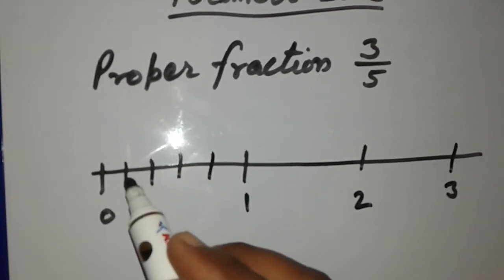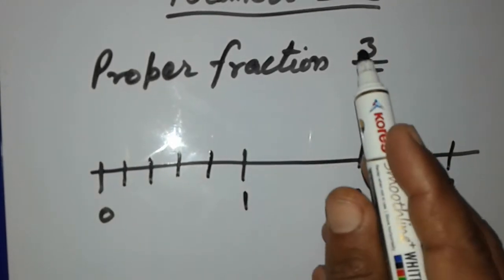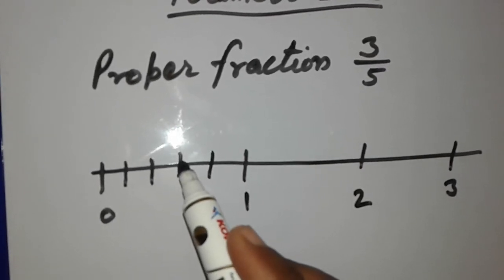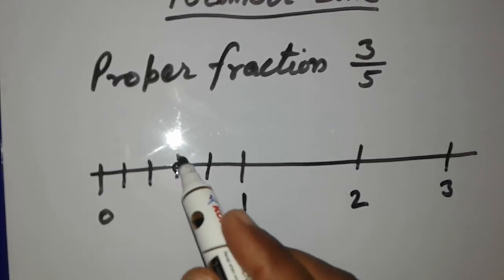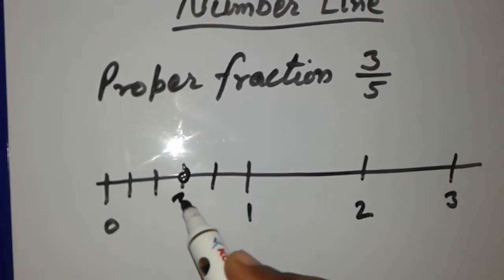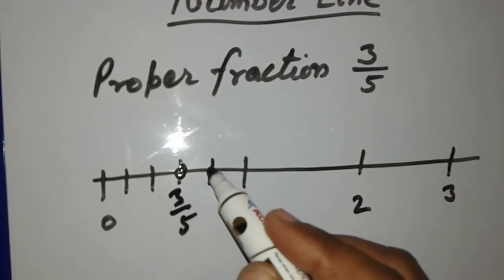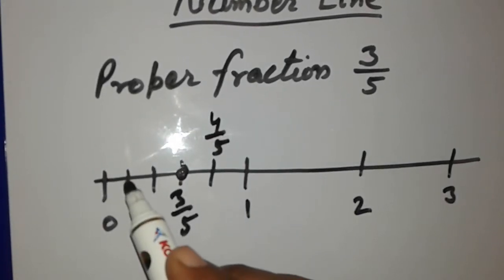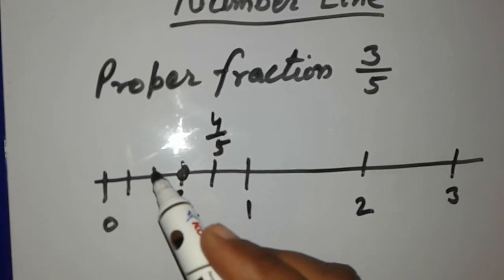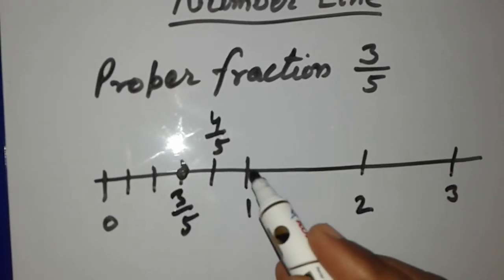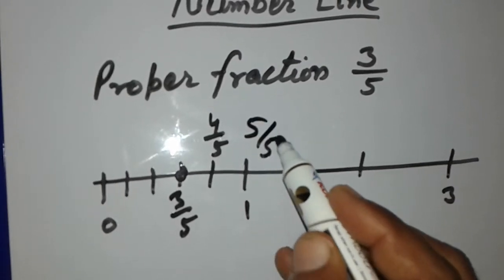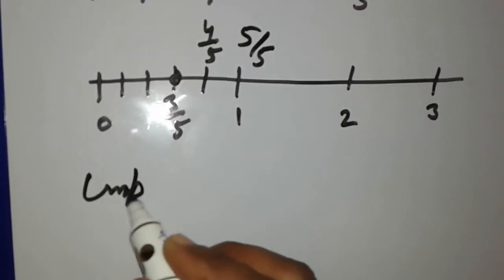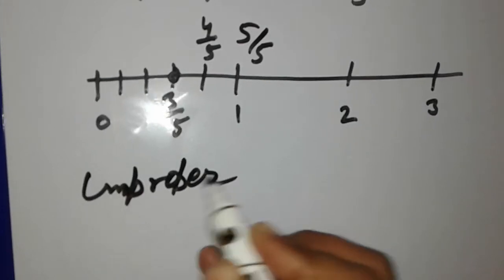The numerator is 3, so we count: 1, 2, 3. This point is 3 upon 5. This point is 4 upon 5. This part is 2 upon 5, this part is 1 upon 5, and this part is 5 upon 5, that is 1. Now we will represent an improper fraction.